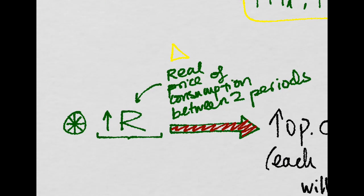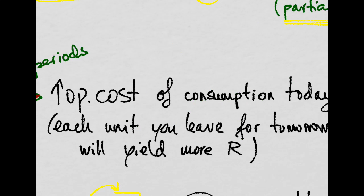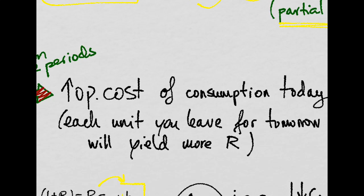Now the interesting case: what happens when there is a positive shock in the interest rate? That is, when there is an increase in the real price of consumption between two periods. The opportunity cost of consuming today is higher, because each unit of consumption you leave for tomorrow — that is, each unit you save — will yield a higher interest rate in the future and will pay you more.